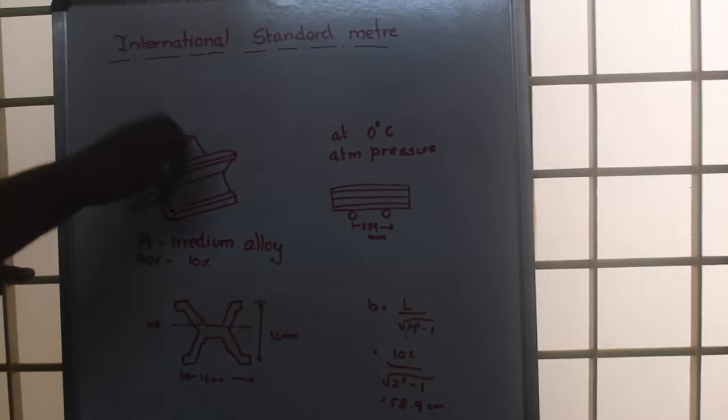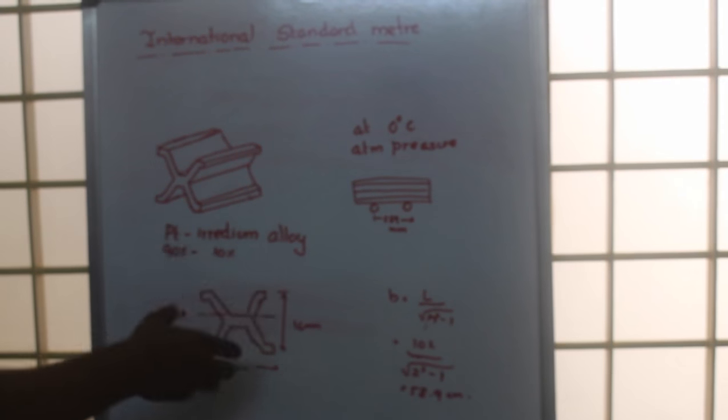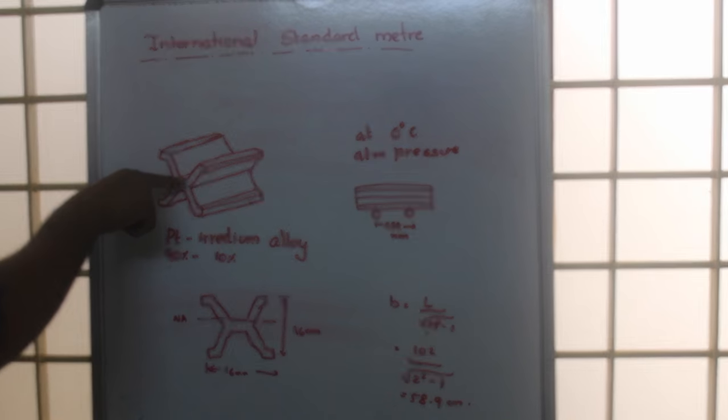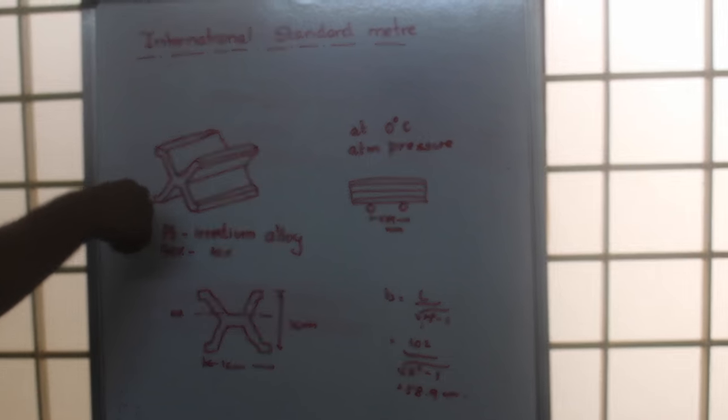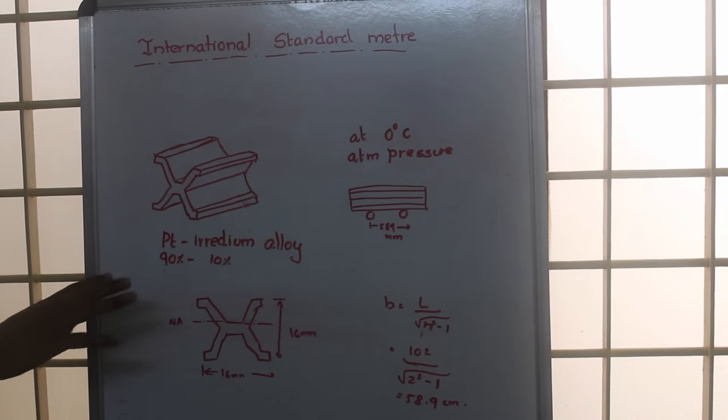We can use this as a standard or as a reference to other measuring devices. This surface will be highly polished so that we are able to identify the scribings easily, and this particular surface will be in the neutral axis.